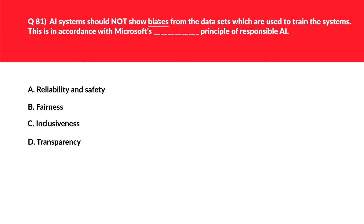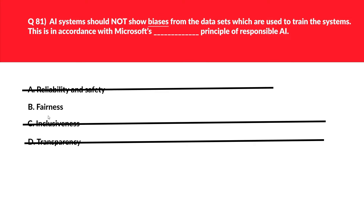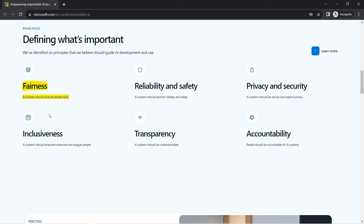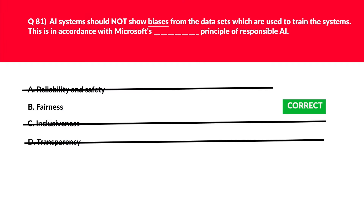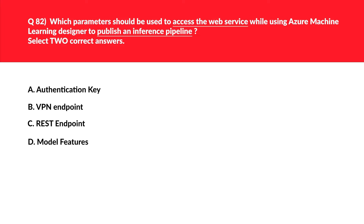The keyword here is 'bias.' Whenever you see a keyword like bias in the question, we know the principle of fairness comes into picture — because the principle of fairness means the AI system should be unbiased. We'll keep option B and reject the rest. The official documentation states: 'Fairness — AI systems should treat all people fairly.' So we log option B as the correct answer.